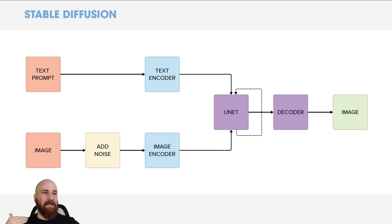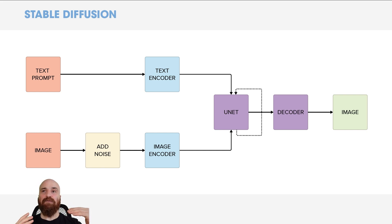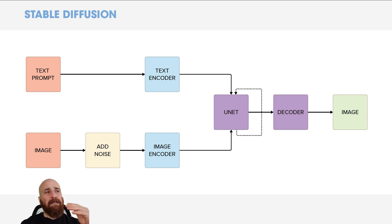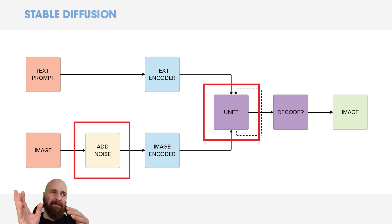Now let's look at how diffusion models actually work. We know you can write a text prompt and get an image, or put in an image and get an image out — text-to-image and image-to-image methods. There's an interesting step called 'add noise,' and after noise is added to an image it goes into something called a UNet, something happens there, and then the decoder renders an image. This diagram reveals what really happens under the hood in Stable Diffusion.